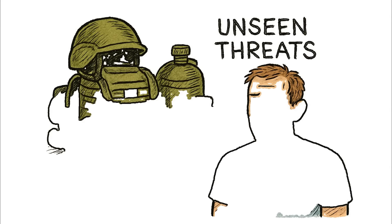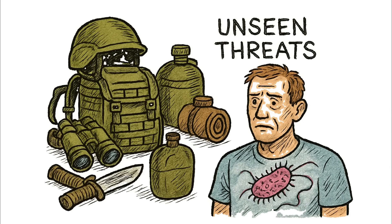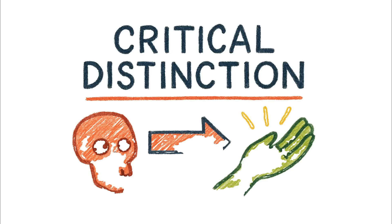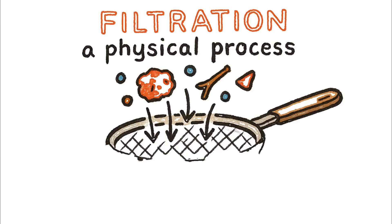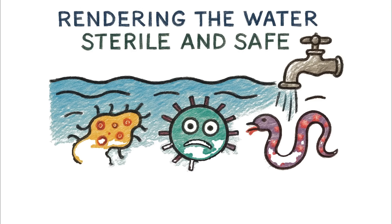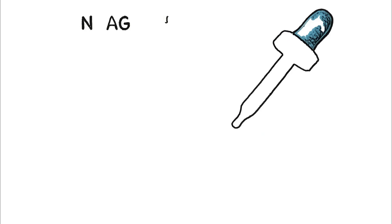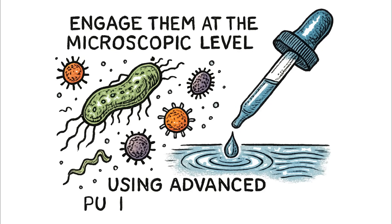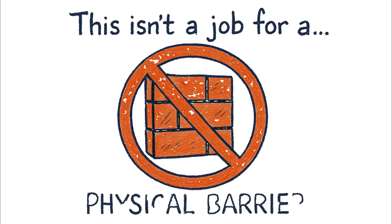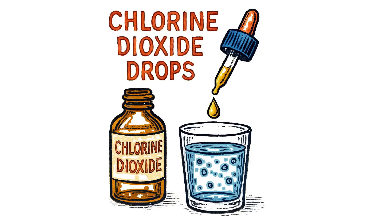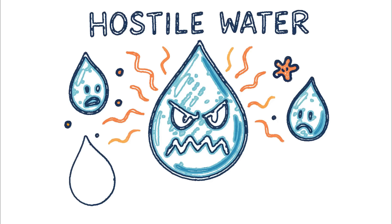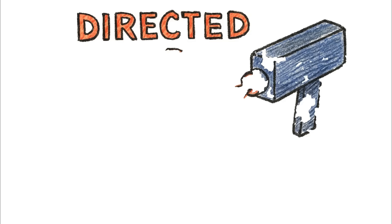Your barrier is a welcome mat for an invisible invader that will shut your body down from the inside out. This brings us to a critical distinction that can mean life or death: filtering is not purifying. Filtration is a physical process — a sieve — it works on the big stuff. Purification is an absolute process; it means rendering the water sterile and safe from all biological threats, including the Sneaks. To neutralize these microscopic intruders, you have to go to war on their level. This isn't a job for a physical barrier — it's a job for chemical warfare. Iodine tablets. Chlorine dioxide drops. These change the very chemistry of the water, making it hostile territory. Another weapon is directed energy.